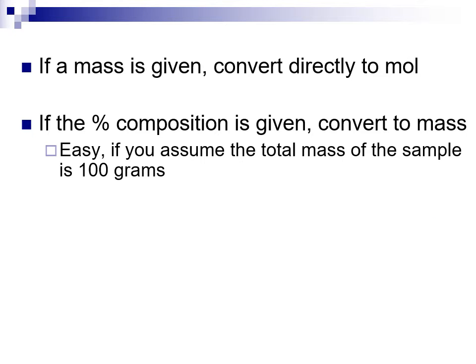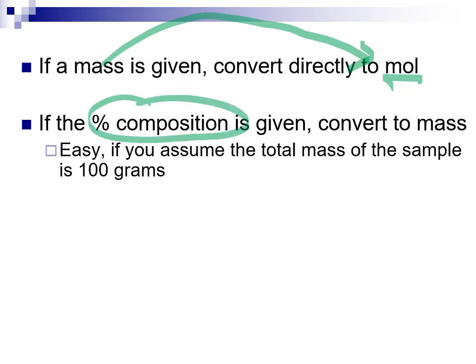If we do have the mass given, we're going to convert mass directly to moles, because the formula is a mole ratio — like water: two moles of hydrogen, one mole of oxygen. If the percent composition is given, we've got one more step at the beginning. We don't have the masses, so we can't go directly to moles, but we do have the percent. A percent could apply to any amount, so all we need to do is assume that we have 100 grams, because it's an easy number to work with.